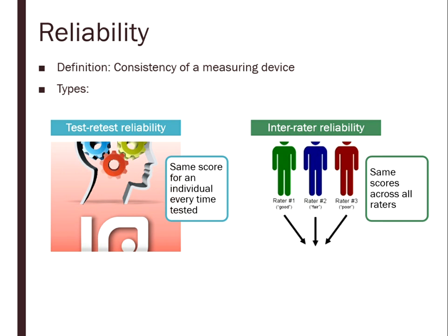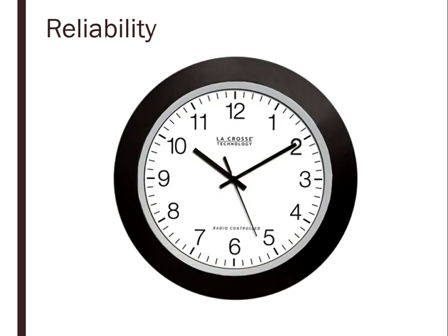Reliability can be measured in different ways, but the overall definition remains the same: consistency of a measuring device — whether that's a test in test-retest reliability, or observers rating behaviors. Now here's a clock. Some people set their clock ahead by a random number of minutes to trick themselves into hurrying. Every time you look at that clock, it gives you the same number — time plus X, however many minutes you set it ahead.